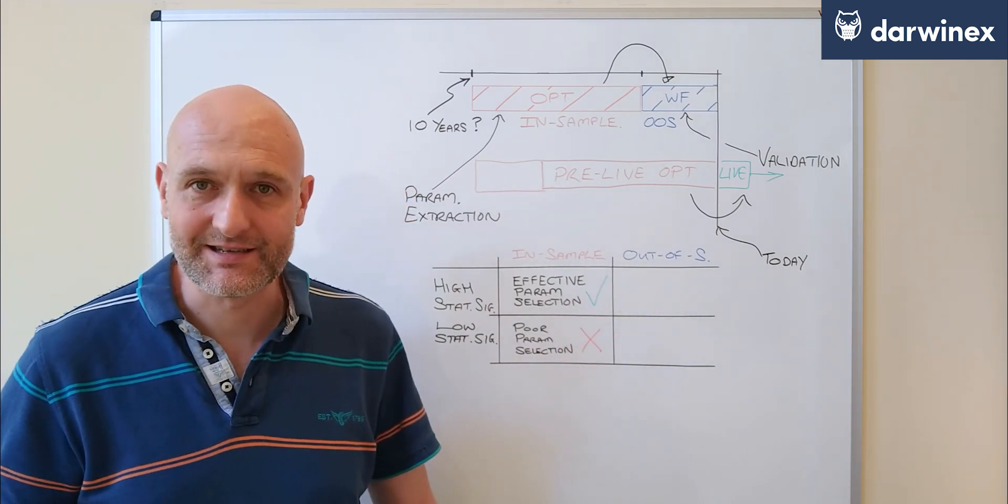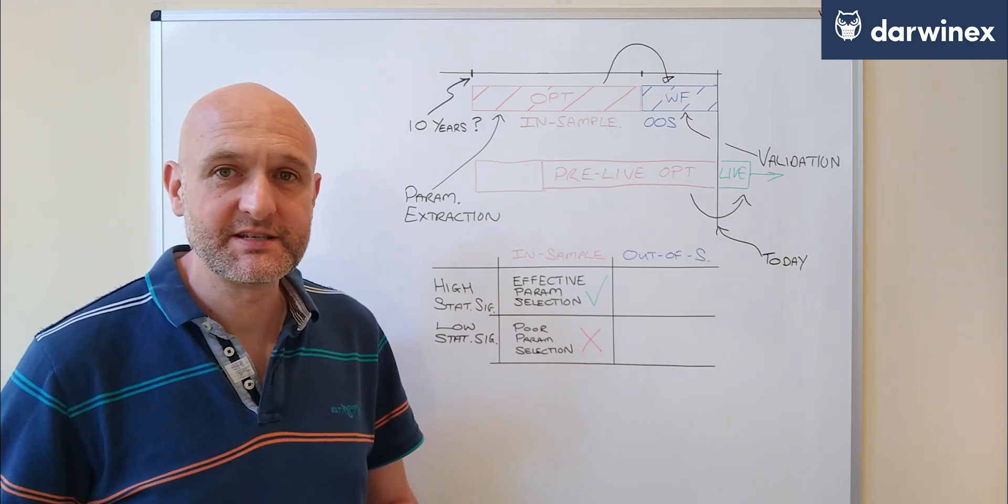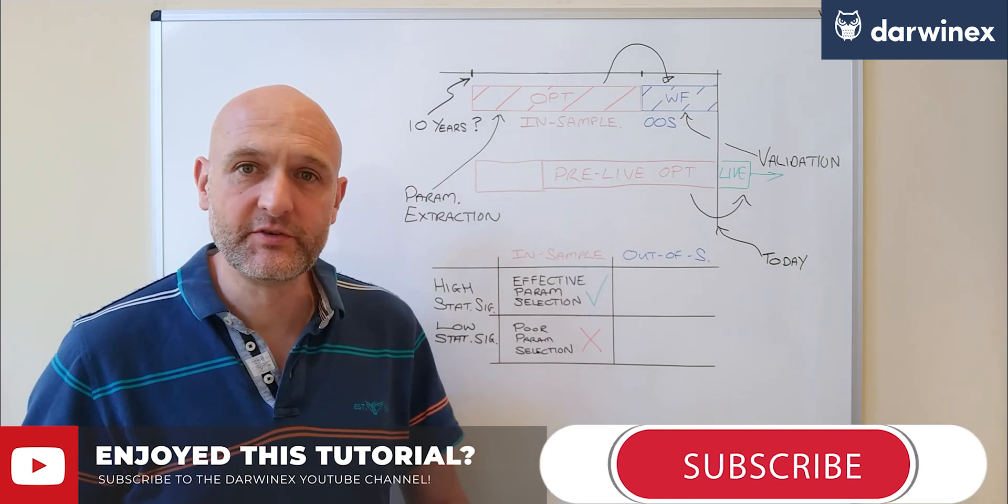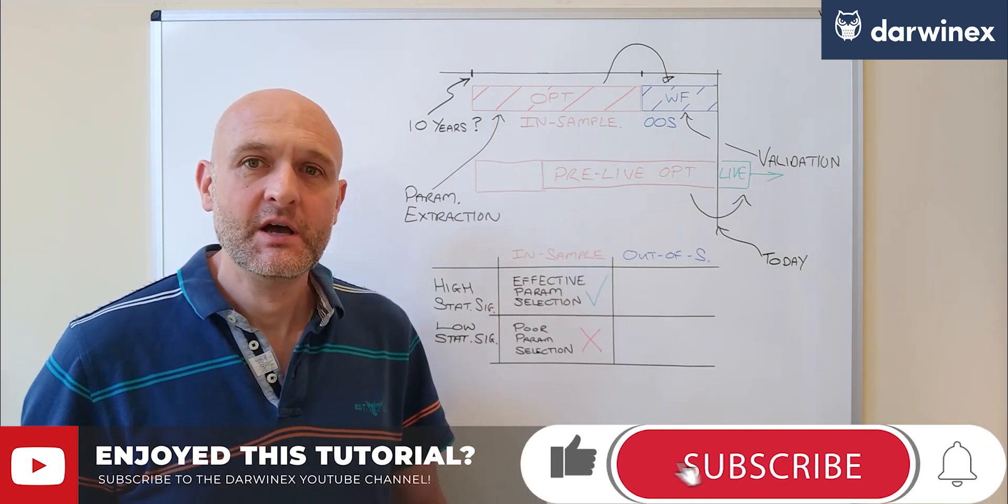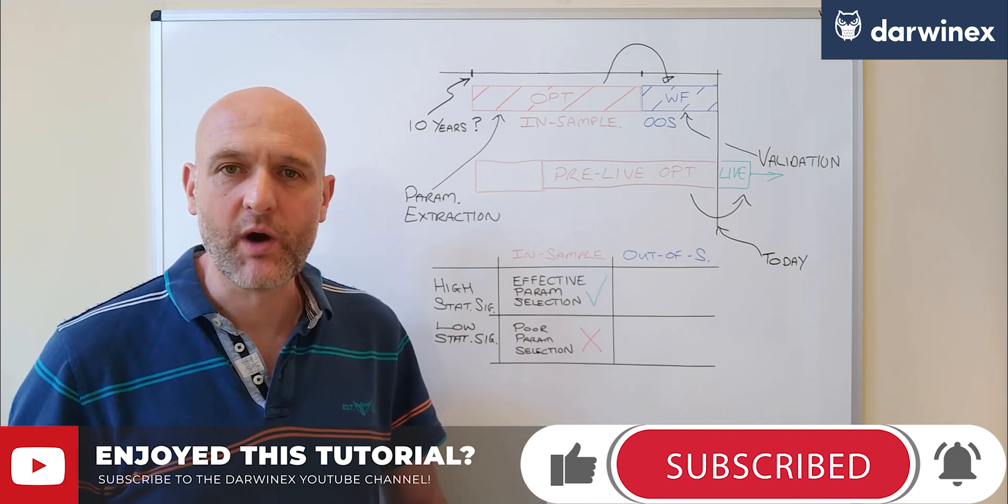But as I said before, the implications of poor statistical significance in this out-of-sample walk forward phase is very different. So click on the link here to part 7.3 and we'll take a look at why this is.